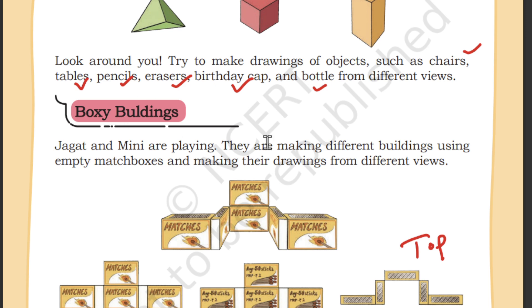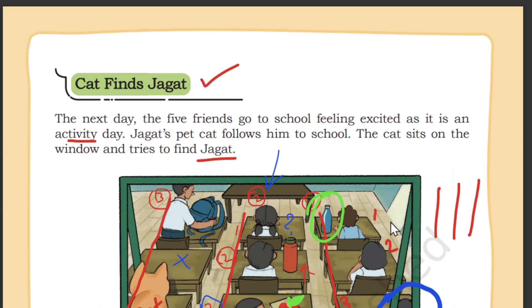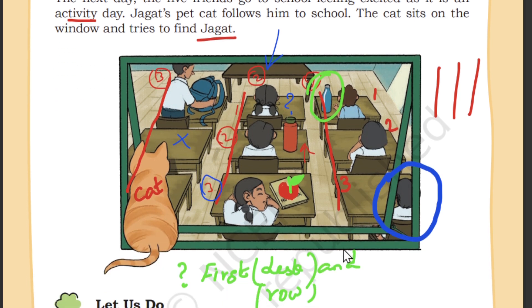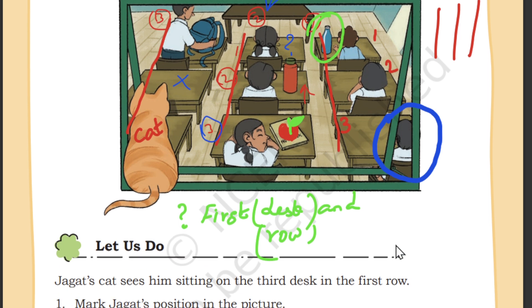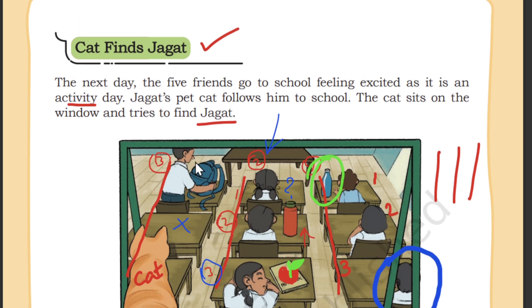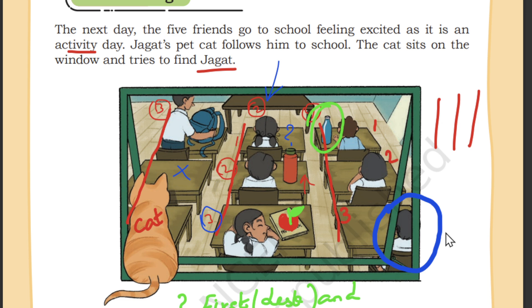Next, we did Boxy Buildings — we arranged matchboxes to find a shape and discovered different views: front view, back view, and top view. Then there was an important question with Finds Cat and Finds Jagat, where we needed to find certain items by row and column. For example, to describe the position of the blue bag: it is on the first desk in the third row.